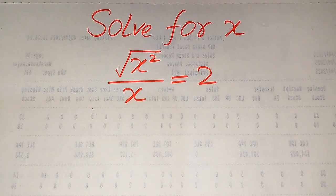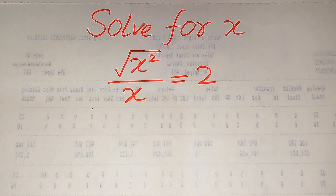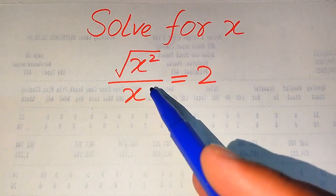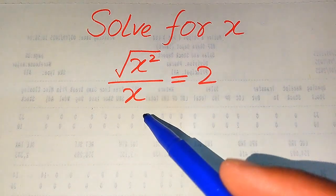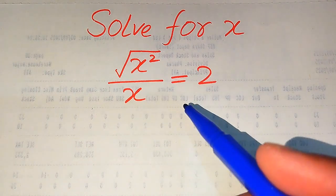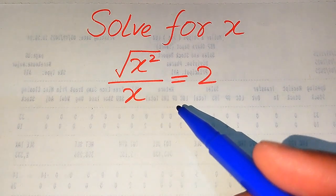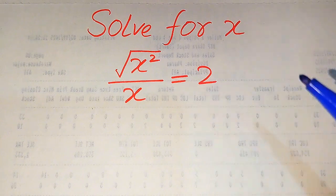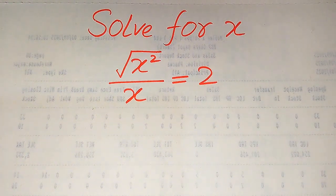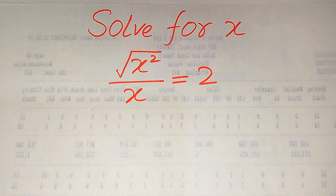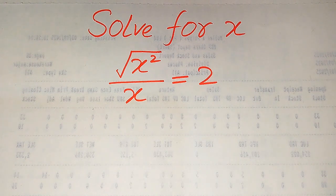Hello everyone. How to solve this problem for the values of x: if we have the square root of x squared divided by x equals 2, and we solve this problem for the values of x. First we find all the roots of this equation, and at the end we will verify which of the roots are solutions and which of the roots are extraneous roots.